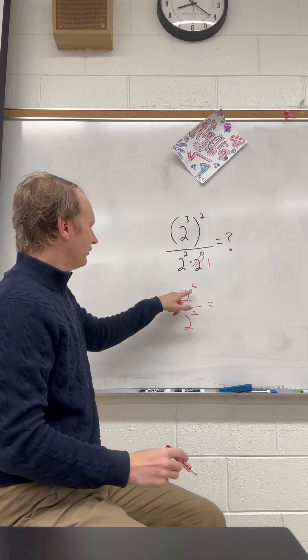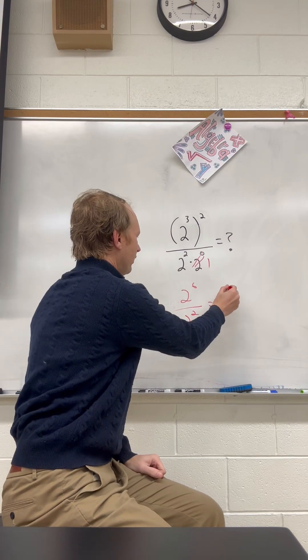Now we're going to subtract the exponents. 6 minus 2 is 4, so we end up with 2 to the 4th power.